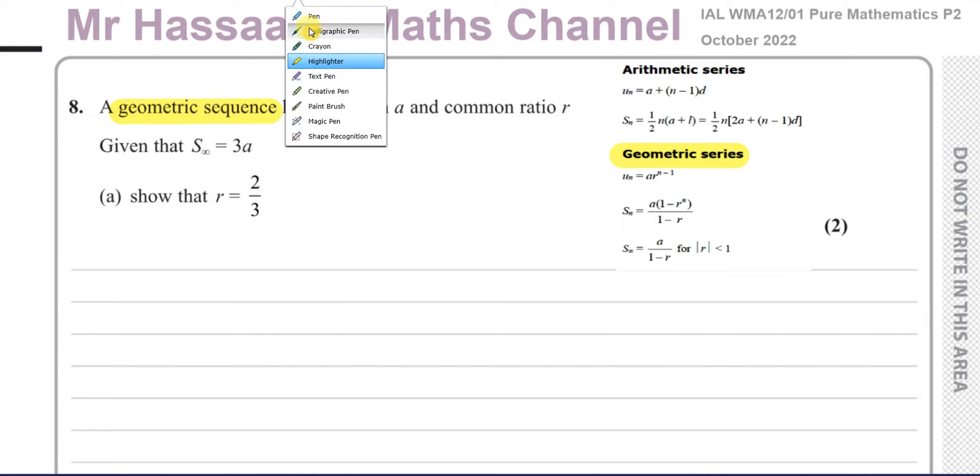We know that here the sum to infinity equals A over 1 minus R. So that's what we're going to be dealing with. There's two ways we can actually handle this question. The most common and probably the better way is to substitute, instead of the sum to infinity, 3A, and show that R becomes two-thirds by doing that.